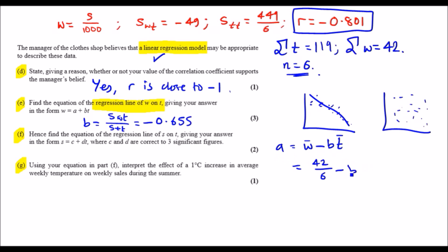So writing on the whole thing, it would just be 42 over 6 minus the value of B, which we already have on the side, times T with the mean of T, which is 119 over 6. So keep this B in your calculator, so just use the answer button. So it would be 42 over 6 minus answer times 119 over 6.